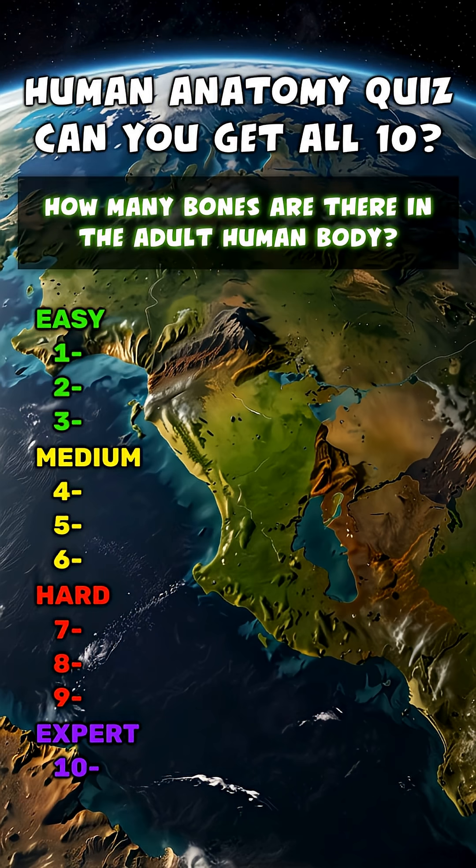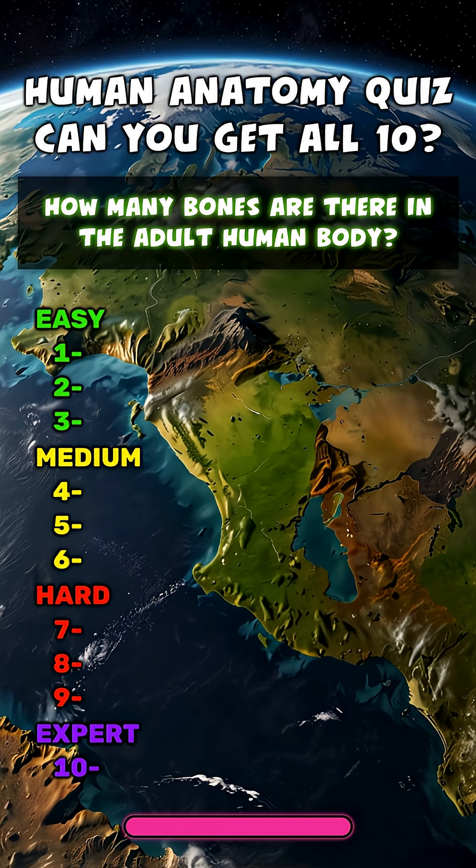How many bones are there in the adult human body? 206.